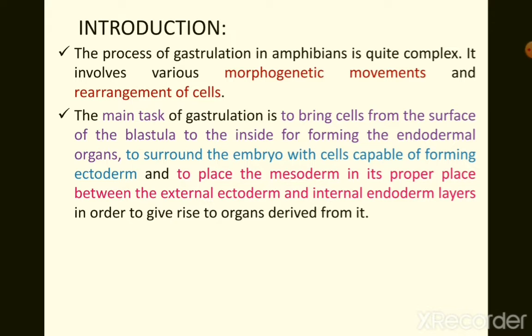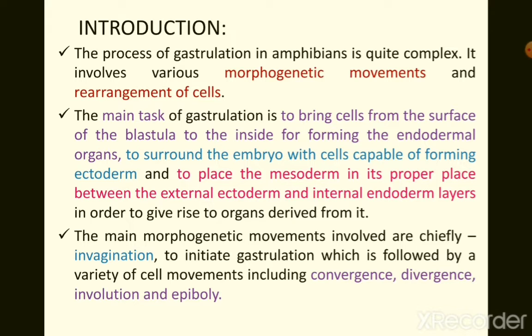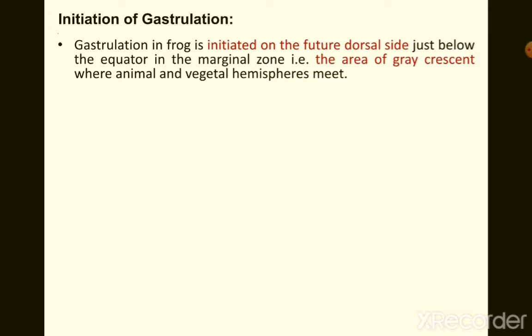The main morphogenetic movements involved are invagination, followed by convergence, divergence, involution, and epiboly. All these morphogenetic movements are seen in gastrulation, and predominantly the initiation takes place by the process of invagination.